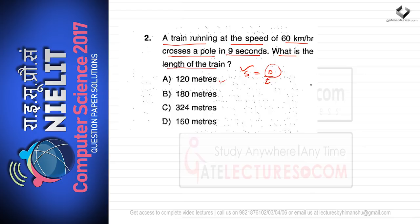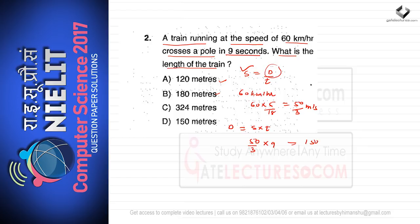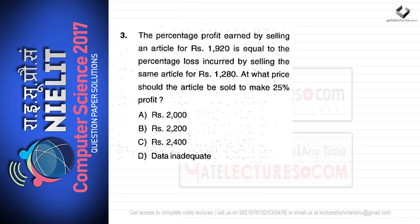The options are given in meters, so we first convert speed from 60 km/h to meters per second by multiplying by 5/18, giving 50/3 m/s. Distance equals speed multiplied by time: (50/3) × 9 = 150 meters. So the length of the train is 150 meters, and option D is the correct option.